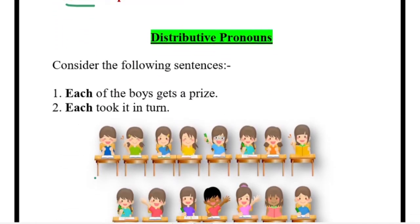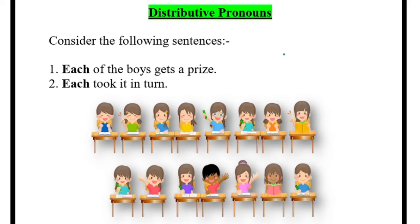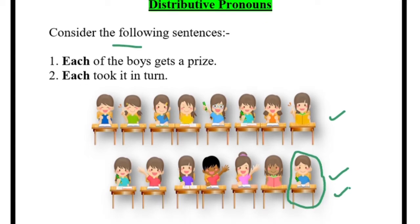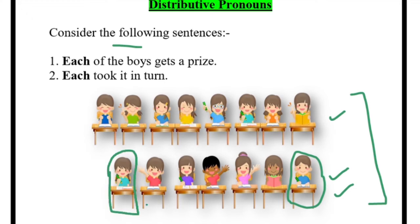Now we'll move to distributive pronouns. Consider the following picture — you are sitting in a class full of children. I come inside the class and call Satish — maybe it is his birthday today — and I tell Satish to distribute chocolates, candies, or pencils and erasers among each of the boys and girls in the class. That means one toffee at a time — he is going to give one toffee to each, and everybody is going to get the same number of toffees. So 'each' means one at a time — this has to be singular.